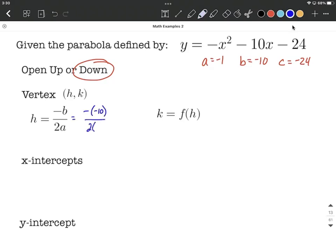Over 2 times a, which is negative 1. So fill in those into the formula. And how I like to remember this is it's just part of the quadratic formula. It's leaving out the plus or minus the square root, b squared minus 4ac. It's the easier part to remember in general.